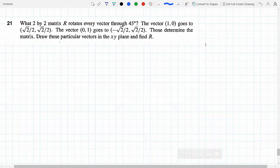What 2 by 2 matrix R rotates every vector through 45 degrees? Okay, let's think this one through.